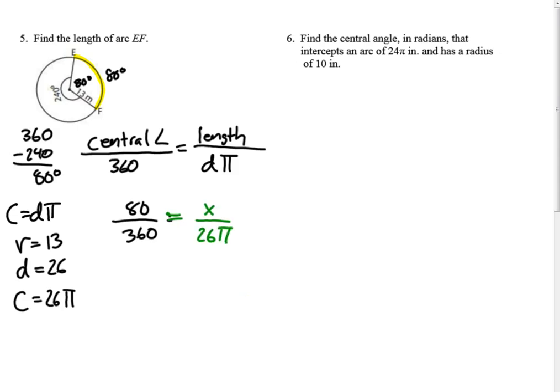And we cross multiply 360x equals 80 times 26 would be 2080 pi. 2080 divided by 360 is 52. If this said leave it in terms of pi, it would be 52 pi over 9.